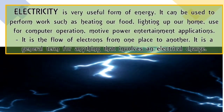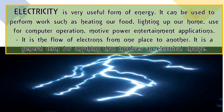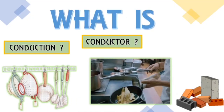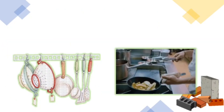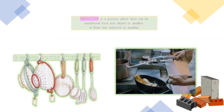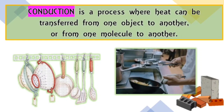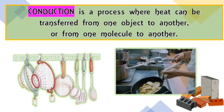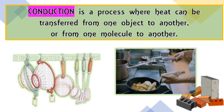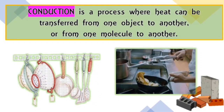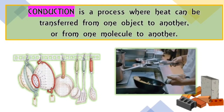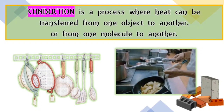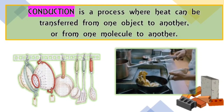Electricity is a general term for anything that involves an electrical charge. What is conduction, conductor, and insulator? Conduction is the process where heat can be transferred from one object to another or from one molecule to another. Through conduction, materials will increase their temperature because the heat can easily flow in them. Just like cooking pans — pans are made of metal because energy is passed easily and quickly between the particles in most metals.